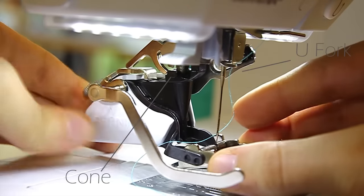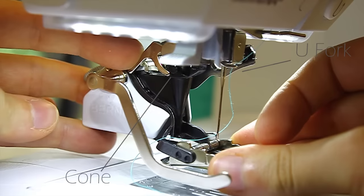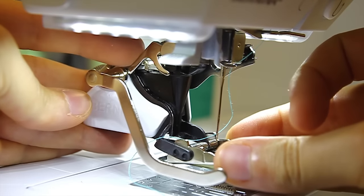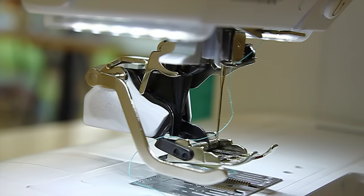Insert the foot sideways from the right behind the needle, placing the fork up over the needle clamp and the shank under the positioning cone. Attach by securing the clamp lever.